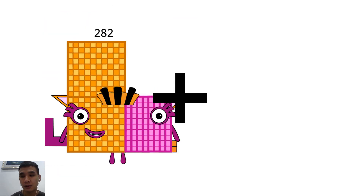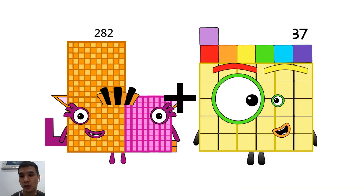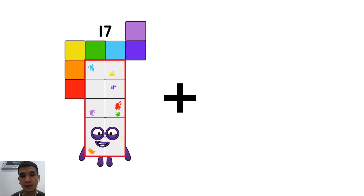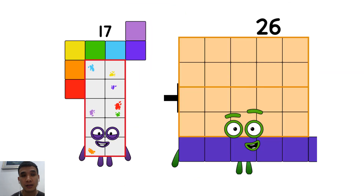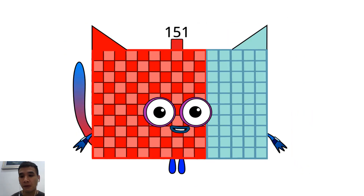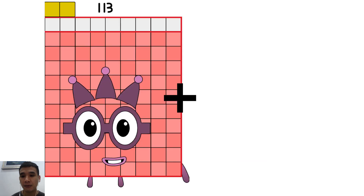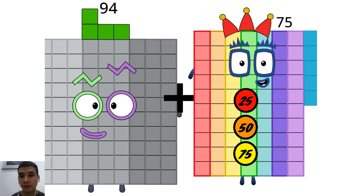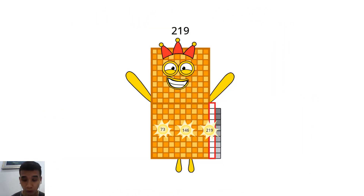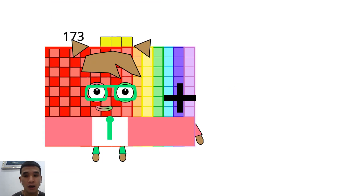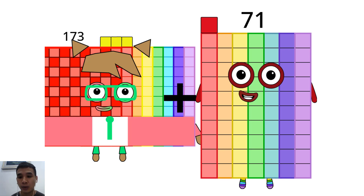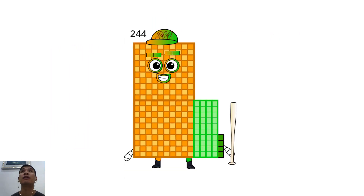282 plus 37. 17 plus 134 equals 151. 94 plus 125 equals 219. 173 plus 71 equals 244.